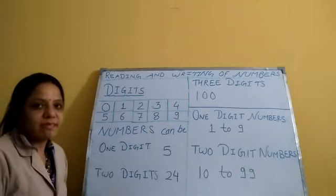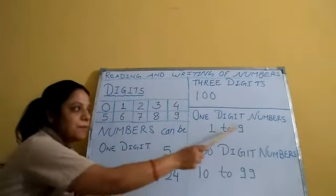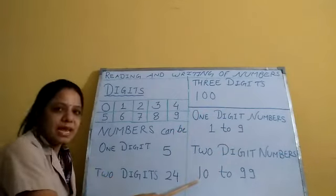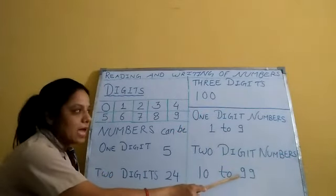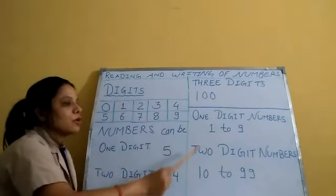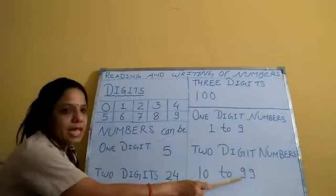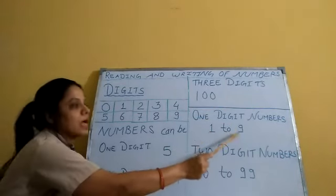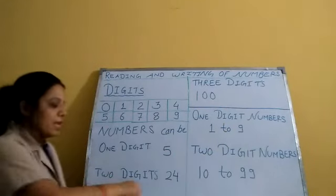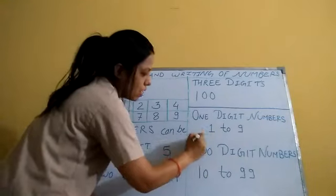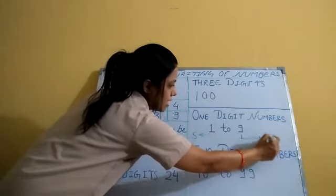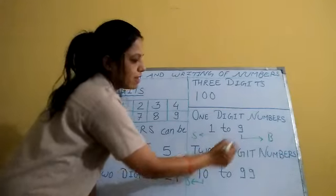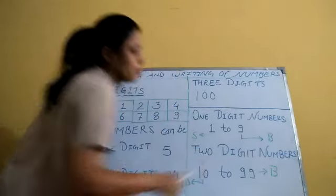1-digit numbers start from 1 and end at 9. 2-digit numbers start from 10 and end at 99. In the 1-digit numbers, 1 is the smallest and 9 is the biggest. In the 2-digit numbers, 10 is the smallest and 99 is the biggest.